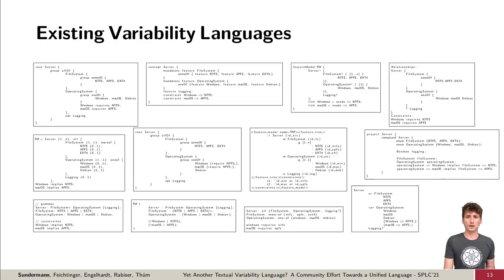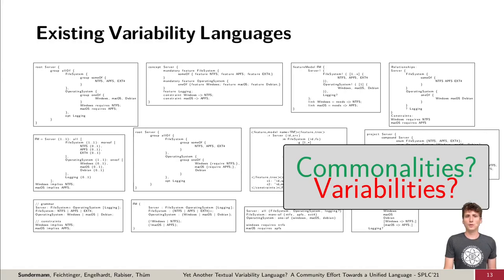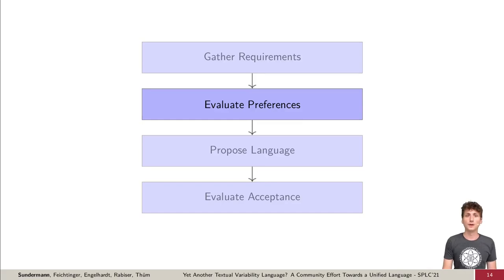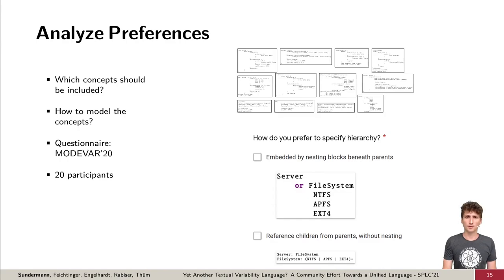Together for our requirements, we analyzed existing variability languages. The idea is to identify popular concepts that are also familiar to the community. We analyzed which concepts are included in all or just some languages. Also we examined in which ways the concepts are modeled in different languages. In the next step, we analyzed the preferences of the community on the identified concepts. We performed a questionnaire at the Modava 2020 with 20 participants. And here, the participants could choose which concepts should be included or excluded and choose the preferred way on modeling different concepts.